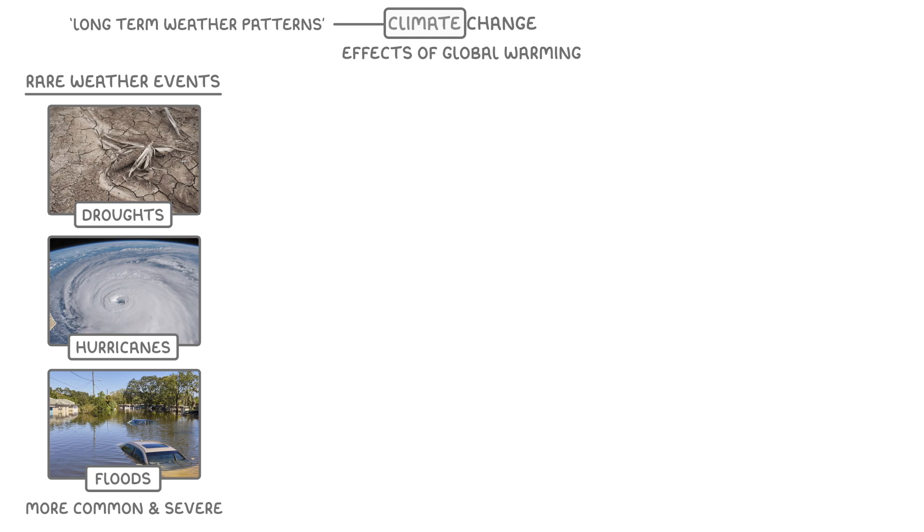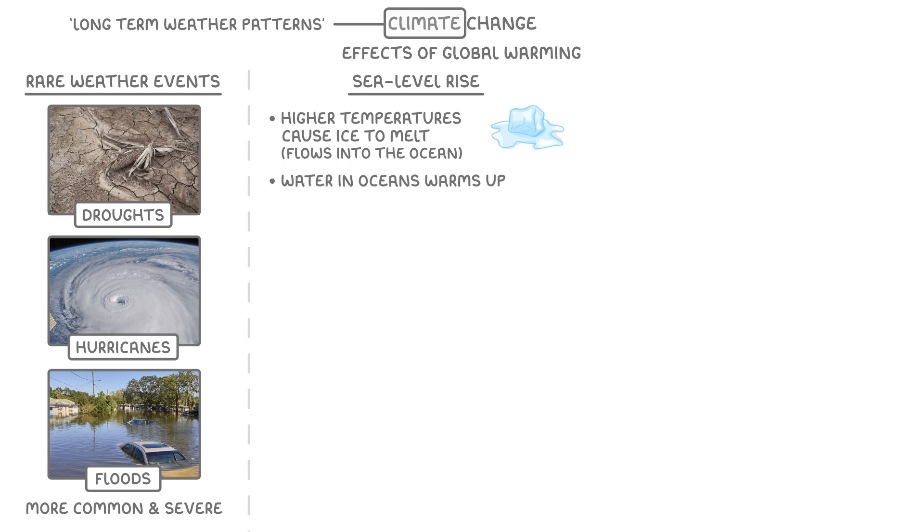Another consequence of global warming is sea level rise, which actually happens for two different reasons. One is that the higher temperatures will cause more ice to melt, which will then flow into the ocean. The second is that as the water in the oceans warms up, it expands, and so its volume will increase, making the sea levels rise even more.